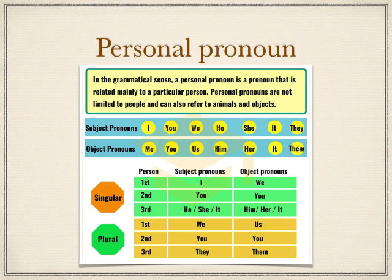Whenever pronouns are used in place of subjects, they are called subject pronouns — such as I, you, we, he, she, it, and they. The pronouns which are used in place of objects are called object pronouns — such as me, you, us, him, her, it, and them.